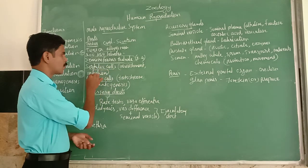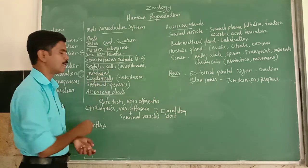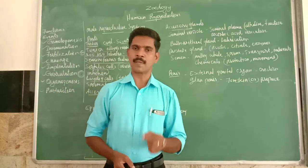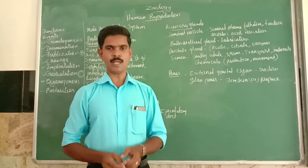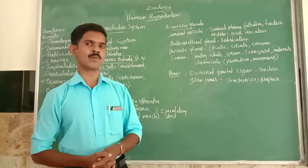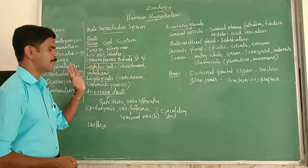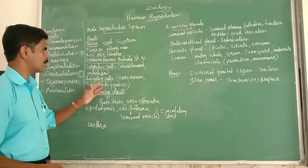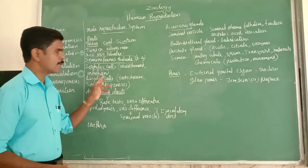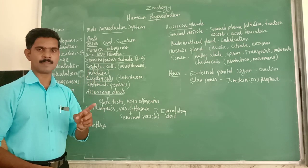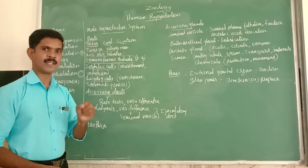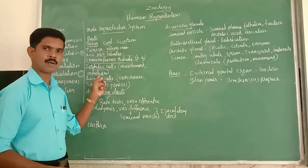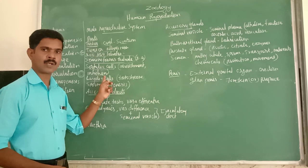The Sertoli cells also produce a hormone called inhibin. This inhibin hormone plays a very important role in controlling the production of sperm. So the two functions of Sertoli cells are: nourishing the developing sperm until maturation, and secreting inhibin hormone which controls spermatogenesis.